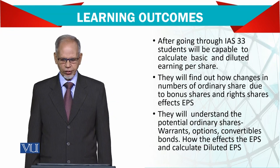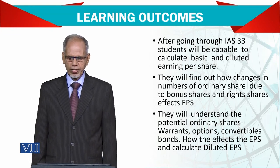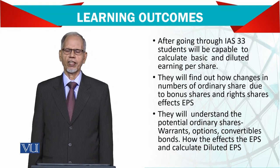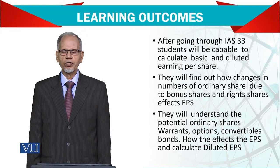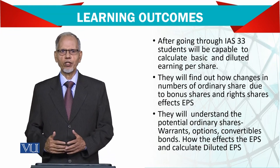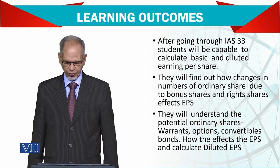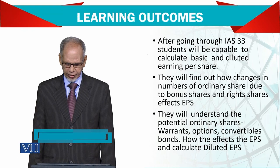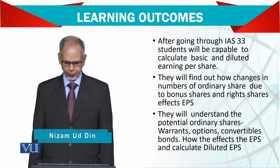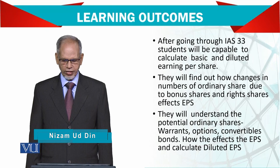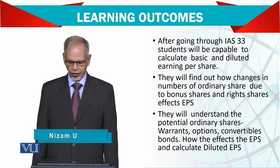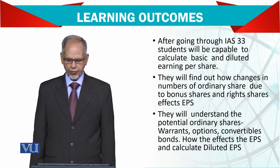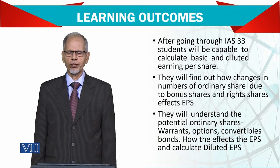Let's see the learning outcomes. After going through IAS 33, students will be capable of calculating basic and diluted earnings per share. Diluted means that it reduces due to some potential shares. They will find out how changes in the number of ordinary shares due to bonus shares or rights shares affect earnings per share. They will also understand potential ordinary shares — warrants, options, convertible bonds — and how they affect earnings per share.